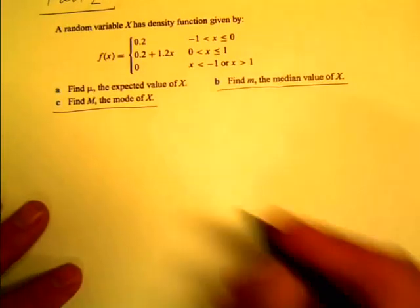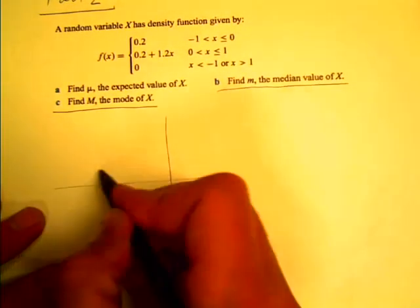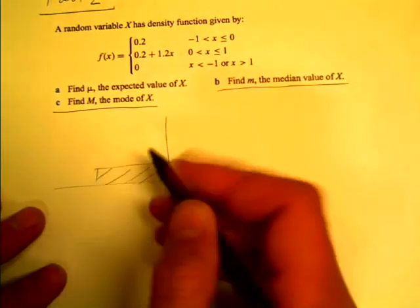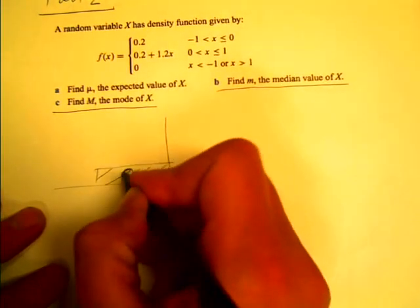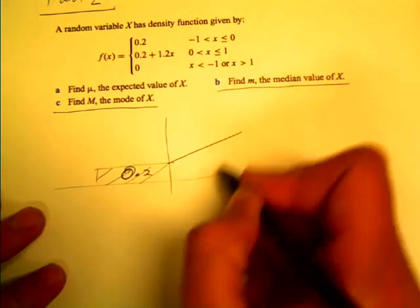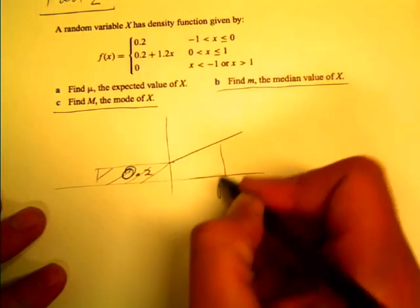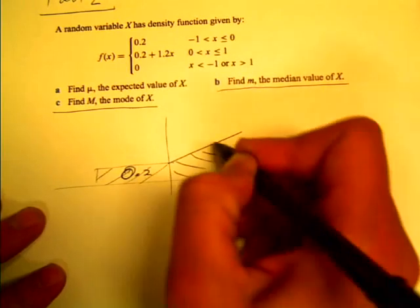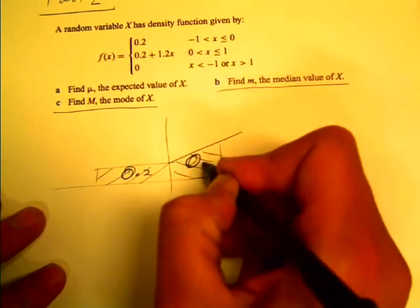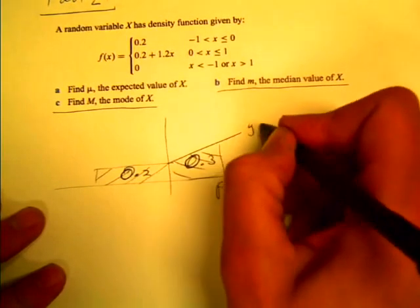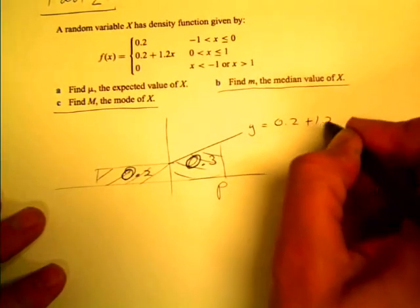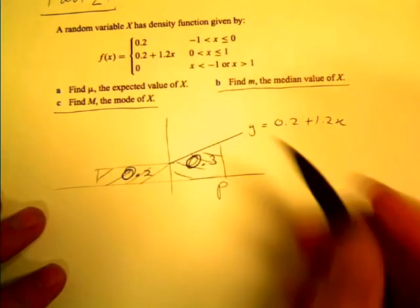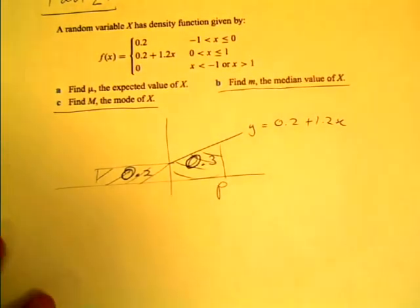Okay, so we're told we've already got this area 0.2, and I want to find a value p so that this area is 0.3, and I know the equation here is y equals 0.2 plus 1.2x. Okay, so that's how we're going to do that.